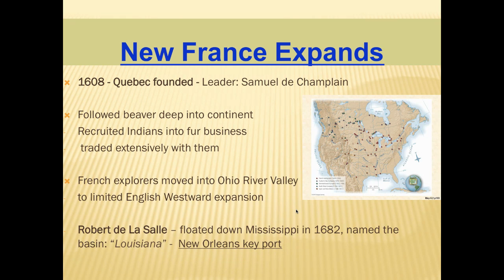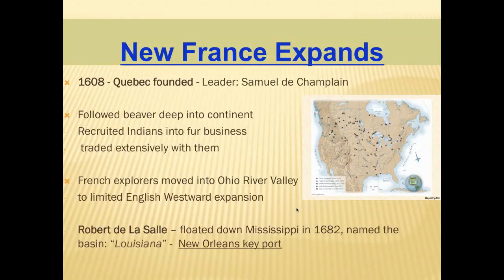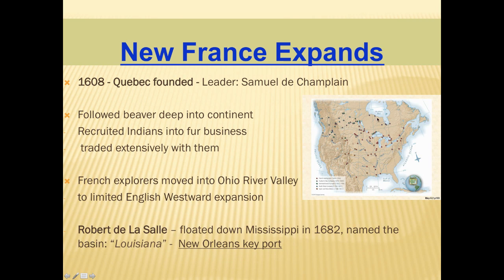Samuel de Champlain made a very fateful decision when he arrived: he befriended the Huron tribe, who were deep, long-standing enemies with the Iroquois. Because Champlain befriended the Hurons, most of the Iroquois would resent this decision by Champlain and the French. Because of the beaver fur trade, the French built semi-permanent forts all throughout North America — especially in Canada, and down through the middle of the continent into the Ohio River Valley.